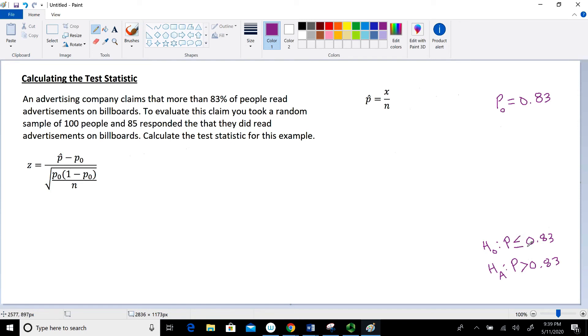So now we have our hypothesis statements. Let's go on and identify some of the other information that we need in order to calculate our test statistic. So right here you can see I have the test statistic written out, the equation for the test statistic. And you can see that I need this value of P hat, which I don't have yet. I have P sub 0, which I already pulled from the given information. And then I also need the sample size N.